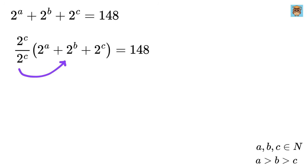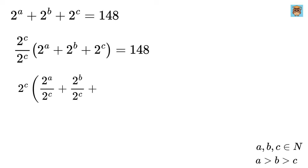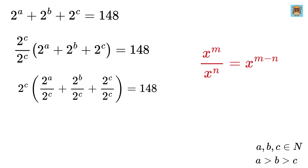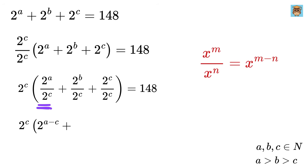We take 2 to the C and divide it with each term individually. We get 2 to the C times (2 to the A divided by 2 to the C), plus (2 to the B divided by 2 to the C), plus (2 to the C divided by 2 to the C). Using the power rule — x to the M divided by x to the N equals x to the M minus N — this becomes 2 to the C times (2 to the A minus C plus 2 to the B minus C plus 1).